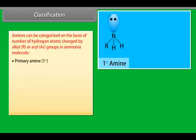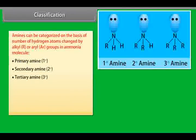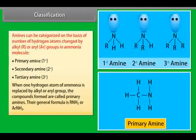Primary amine, that is 1°, secondary amine that is 2°, and tertiary amine that is 3°. When one hydrogen atom of ammonia is replaced by alkyl or aryl group, the compounds formed are called primary amines. Their general formula is R-NH2 or Ar-NH2.